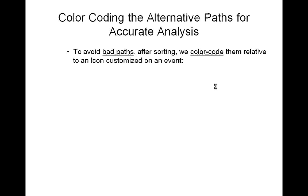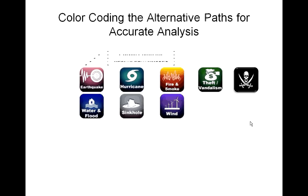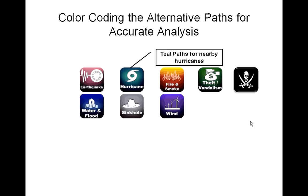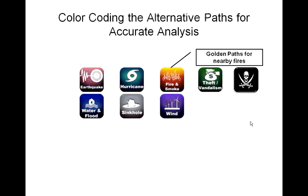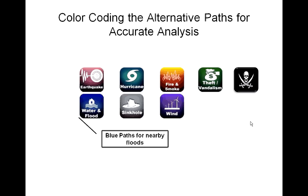To avoid bad paths after sorting, we color-code them relative to an icon customized on an event. The following events are represented: purple paths for nearby earthquakes, teal paths for nearby hurricanes, and golden paths for nearby fires.